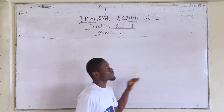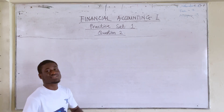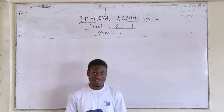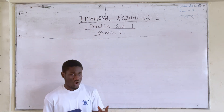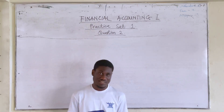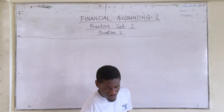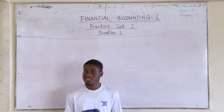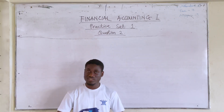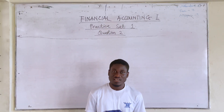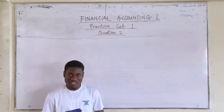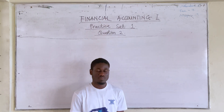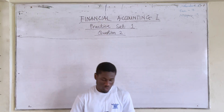With this question we are going to state what has taken place. Unlike the first question where they gave us the transaction and we showed the effects, now they have given us the effects and we are to show what transaction has taken place.